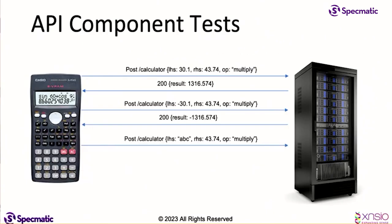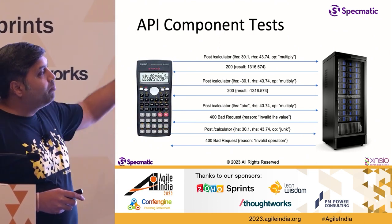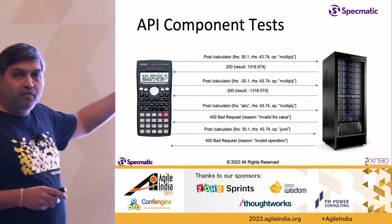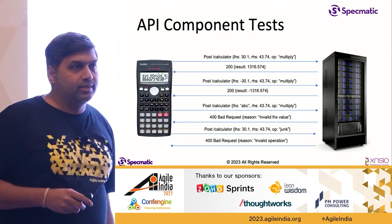I might have some negative values which I also want to make sure work fine. I might give some invalid values and want to make sure that works fine. I might give some junk operations and want to make sure I get a valid 400 response back. This is a mix of what I would call API tests and contract tests.